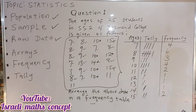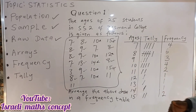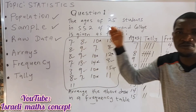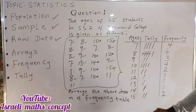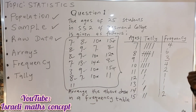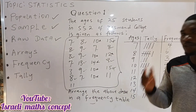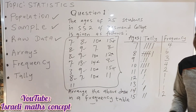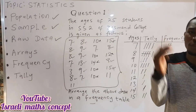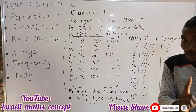This is how to represent your data in a frequency table. Whenever you are given a question of this kind in your examination — whether WAEC, NECO, or any external examination — and asked to put data in a frequency table, this is how to do it. The most important thing is to put your data, your tally, and your frequency in a corresponding manner. Thank you for watching. Remember to subscribe to my YouTube channel, hit the notification button so you'll be notified when I upload new content, and stay tuned as I will cover more topics in statistics. Remember to share this video. Bye-bye.